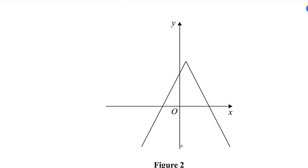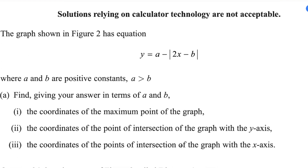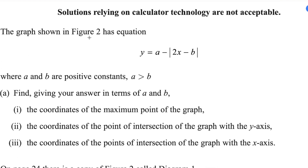This is question 8 from Pure Math 3, from a Pierce Net Excel A-level exam taken in January 2024. A sketch is given for an absolute value function. The graph shown in Figure 2 has equation y equals a minus the absolute value of 2x minus b, where a and b are positive constants and a is greater than b. Find, giving your answer in terms of a and b: the coordinates of the maximum point, the coordinates of the intersection with the y-axis, and the coordinates of the intersections with the x-axis.